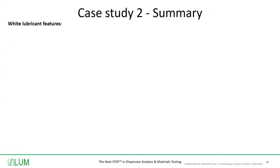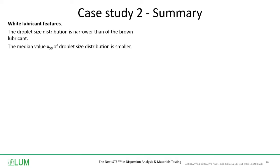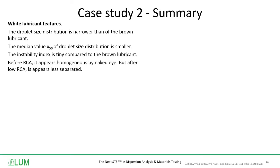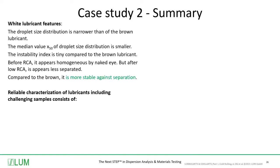In summary for the second case study, the white lubricant features a narrower droplet size distribution than the brown lubricant, and a smaller median value X50. The instability index is tiny compared to the brown lubricant. By naked eye, before accelerated separation, it appears homogeneous. After the accelerated separation using low relative centrifugal acceleration, it appears less separated and is more stable against separation compared to the brown.